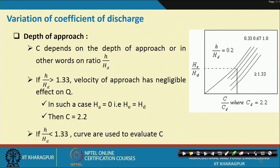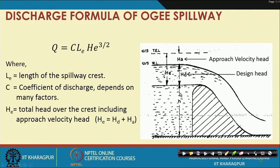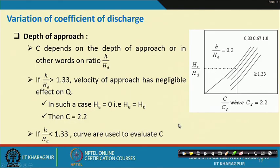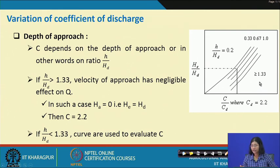Coming to the variation of coefficient of discharge: C depends on the depth of approach, specifically the ratio H/H_d. If H/H_d is greater than 1.33, the velocity of approach has a negligible effect on discharge. In that case, H_a is 0, H_e equals H_d, and C becomes 2.2. As shown in the design chart, C = 2.2 when the H/H_d ratio is greater than 1.33.